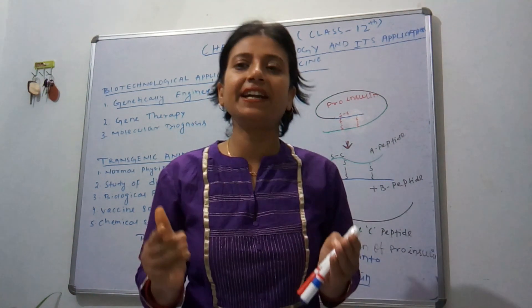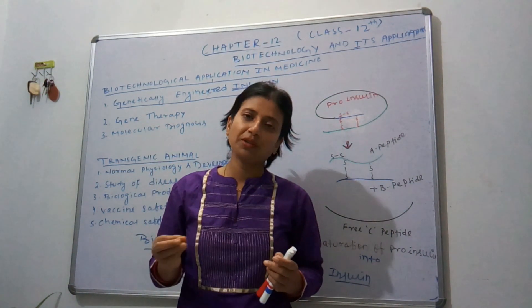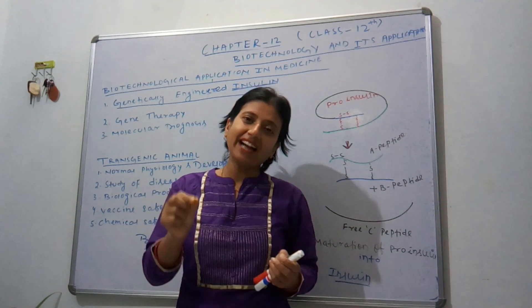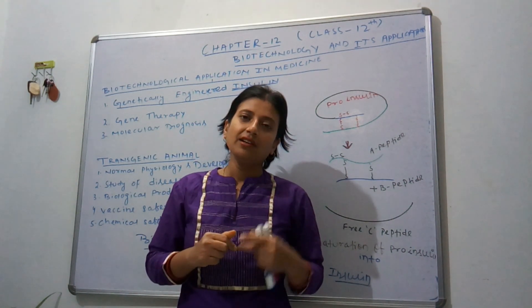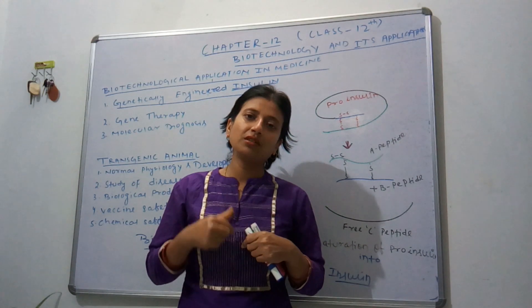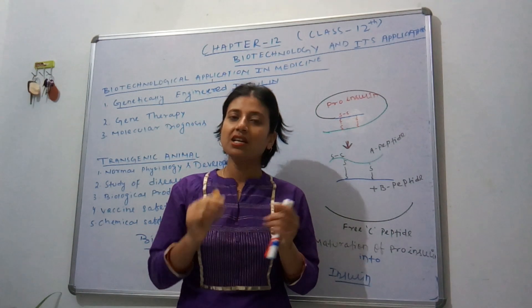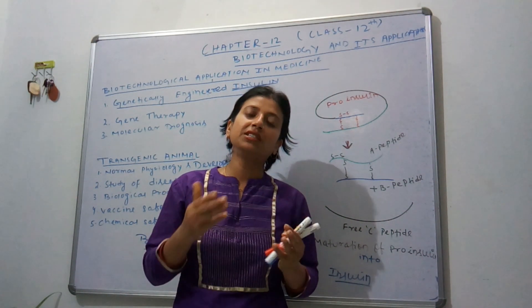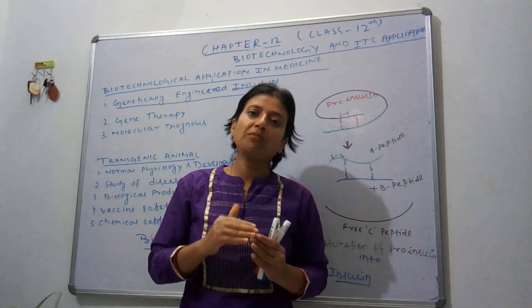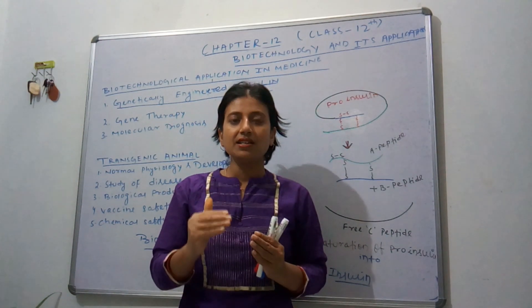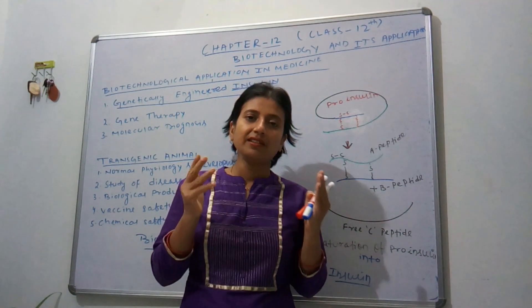Slaughtered cattle and pigs means dead cattle and pigs — by killing them, insulin is extracted and introduced into human beings. If animal insulin is injected into us, our body shows some allergic reactions and other disorders such as skin disorders and itching. To overcome this problem, nowadays genetically engineered insulin has been discovered.